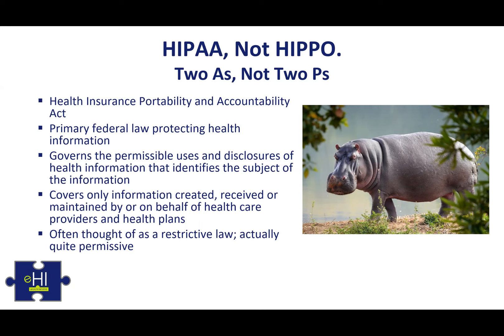Starting with the fact that HIPAA is spelled with two A's, not two P's. It stands for the Health Insurance Portability and Accountability Act, which doesn't really seem like it has much to do with health privacy — but that's where our federal health privacy laws and regulations really lie. It is the primary federal law that protects health information. There are other laws that do so in some way — federal regulations governing substance abuse information, the Common Rule governing research, and FERPA for education records.